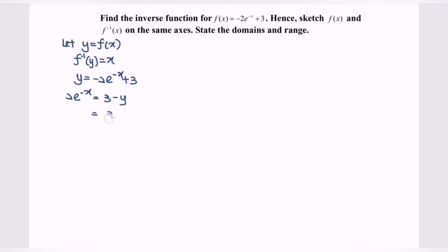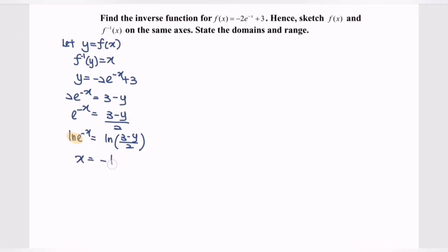Then divide by 2, so we have e to the power of negative x. Taking ln of both sides, we have ln of (3 minus y) over 2. Focusing on this part, we can simplify it as negative x. So x equals negative ln of (3 minus y) over 2. Therefore, f inverse of x is equal to negative ln of (3 minus x) over 2.